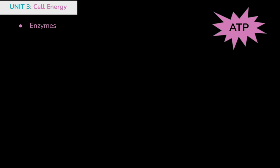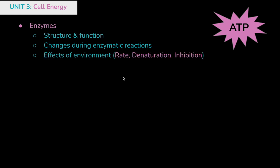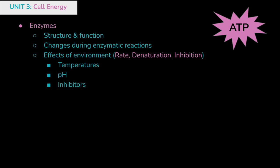Once we get into Unit 3, we're talking about cell energy. This unit starts with enzymes. Remember, enzymes are proteins made of amino acids, and there's a specific active site within an enzyme that interacts with a substrate molecule during an enzymatic reaction. Enzymes remain unchanged after the reaction, whereas the substrate is converted into products. You'll be familiar with environmental effects on enzyme reaction rates — whether the enzyme will be denatured, for example at very high temperatures. Different molecules can inhibit reactions, either blocking the active site for competitive inhibition, or binding an allosteric site causing a conformational change. Enzymes lower the activation energy required for a reaction to occur.